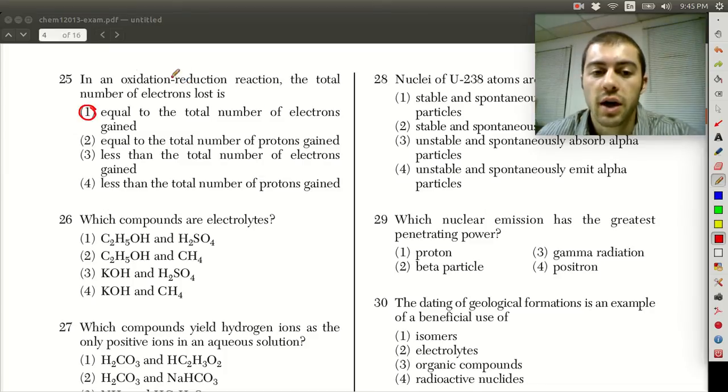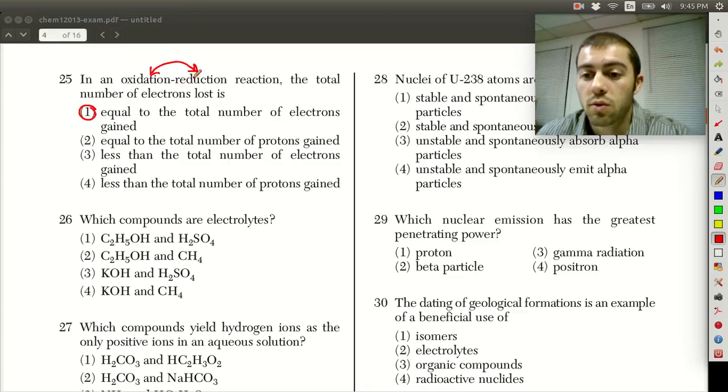In a redox reaction, an oxidation-reduction reaction, this is always a pair. You can't have a reaction that's just reduction or just oxidation. There always has to be this pair because when one element loses, the other one has to gain. Those electrons have to go somewhere. So the total number of electrons lost is equal to the total number of electrons gained. This would be choice number one.